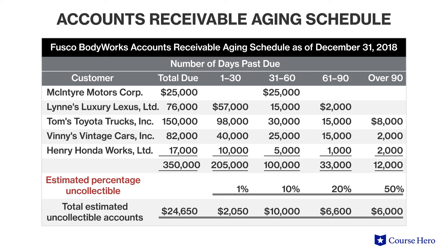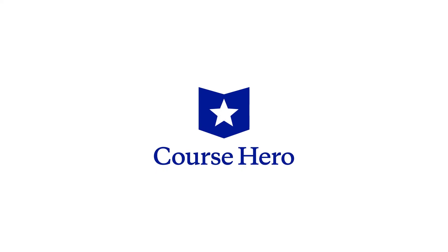The younger balances — those less than thirty days old — are estimated to be one percent uncollectible, or ninety-nine percent collectible. On the other hand, accounts receivable balances beyond ninety days are deemed to be fifty percent uncollectible.